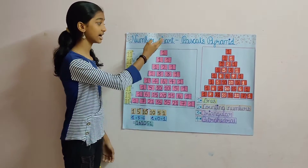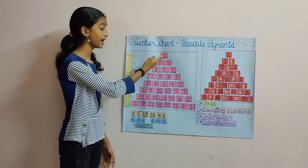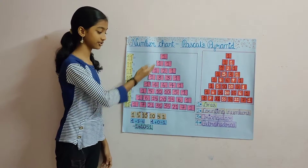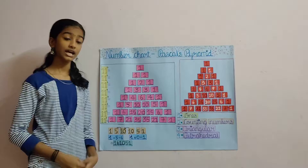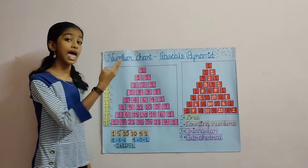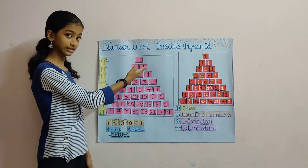To build this triangle, start with one at the top and continue placing numbers in a triangular pattern. Each number is the numbers above it added together.